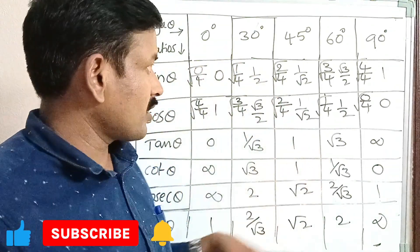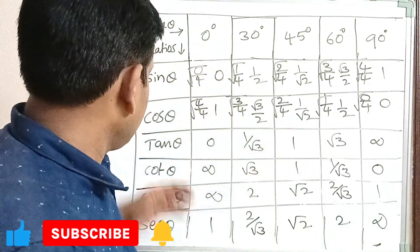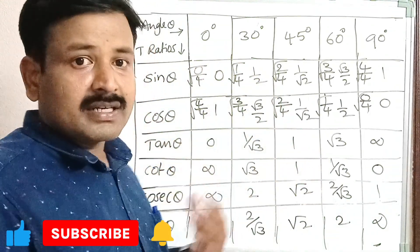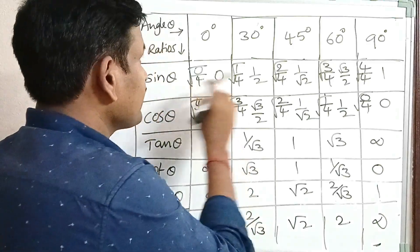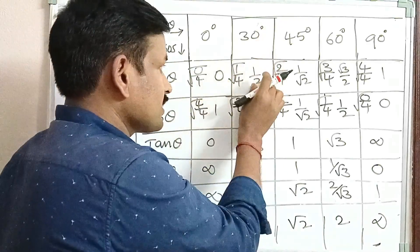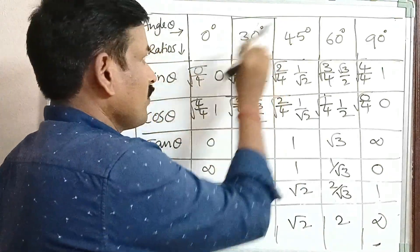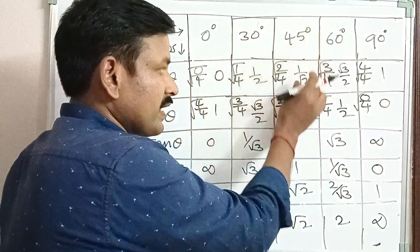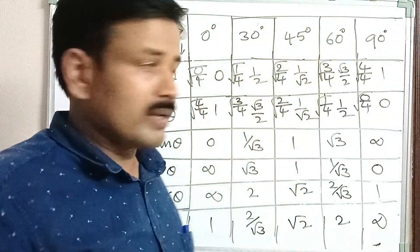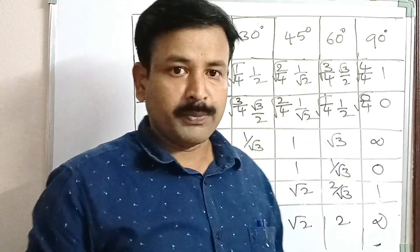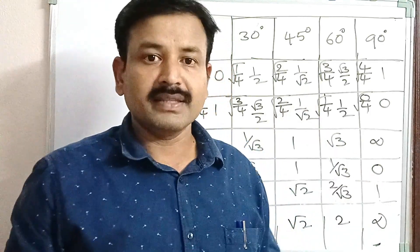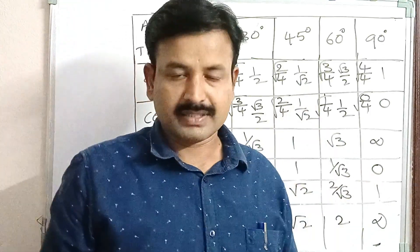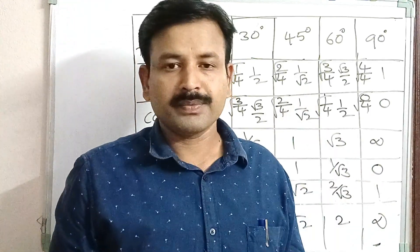This is how we write the trigonometry table. In the next class, we will discuss why sin 30 degrees is 1 by 2 and why sin 45 degrees is 1 by root 2 — we will discuss that briefly in the next class. Thank you.